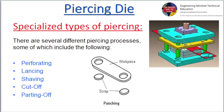Specialized types of piercing. There are several different piercing processes, some of which include the following: Perforating, Lancing, Shaving, Cut off, and Parting off.